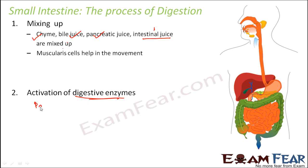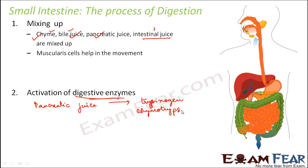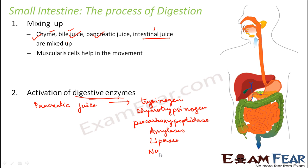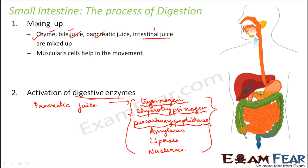Chyme is the food, so there are no enzymes there, and bile juice does not carry any enzymes. The pancreatic juice, however, has a lot of enzymes: trypsinogen, chymotrypsinogen, and procarboxypeptidase — all inactive — as well as amylases, lipases, and nucleases. Many of these enzymes are in their inactive form and need to be activated.